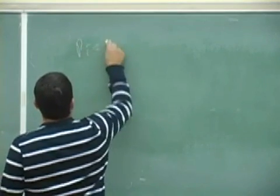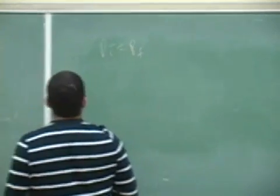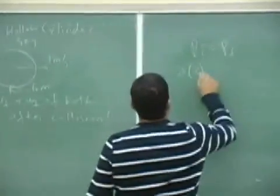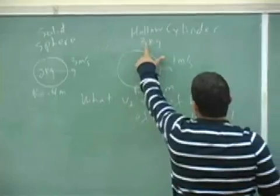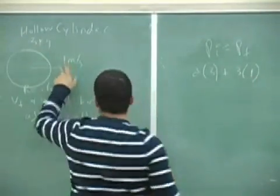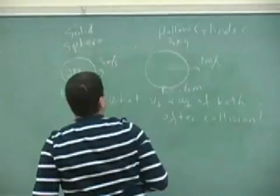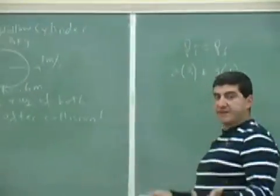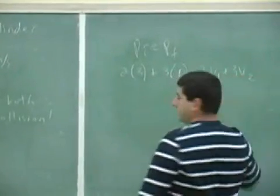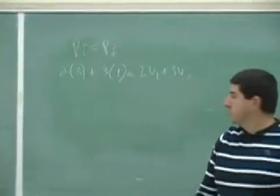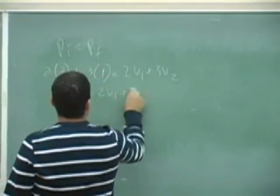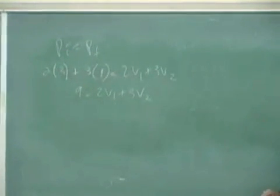So the way to do this then is to just conserve linear momentum and kinetic energy. So P initial equals P final. So we have 2 times 3 plus, this one is the mass is 3 kilograms times that one. That's the initial momentum of the system. Is equal to the final velocity of each one. So we can say 2 V1 plus 3 V2. Each one has a certain velocity after the collision. 2 V1 plus 3 V2. So this one is going to be 6 plus 3, 9. 9 is equal to 2 V1 plus 3 V2.